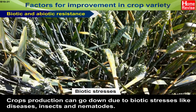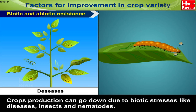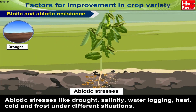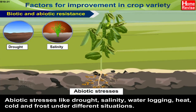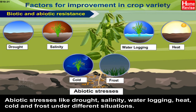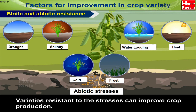Biotic and abiotic resistance: crop production can go down due to biotic stresses, which are diseases, insects, and nematodes, and also by abiotic stresses like drought, salinity, water logging, heat, cold, and frost under different situations. Varieties resistant to these stresses can improve crop production.